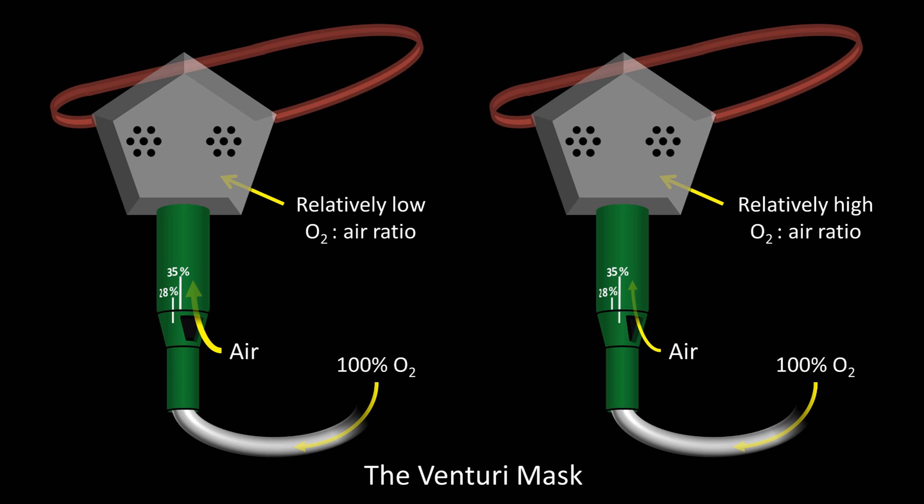The Venturi mask is not without problems and controversy. Despite doctors and respiratory therapists liking to believe that it can deliver a precisely specified oxygen concentration as the dial suggests, there are a number of reasons it is not precise. There is even some debate in the literature as to whether the Bernoulli equation and Venturi effect offer the best descriptions of how the Venturi mask actually works. However, it is certainly widely believed to be an example of the Venturi effect in action.